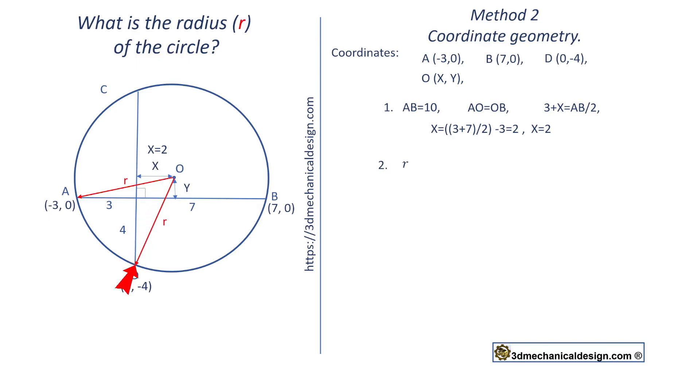Radius OD: radius squared equals x squared plus (y + 4) squared. Radius OA: radius squared equals y squared plus (x + 3) squared.